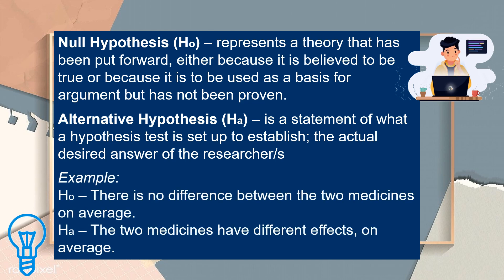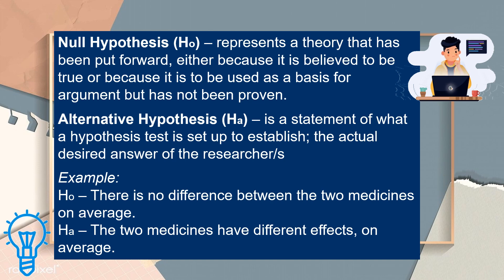Let's have the example. For the null hypothesis: there is no difference between the two medicines on average. For the alternative hypothesis: the two medicines have different effects on average.